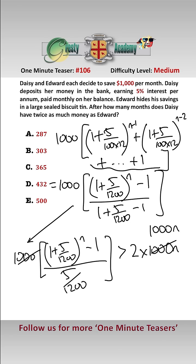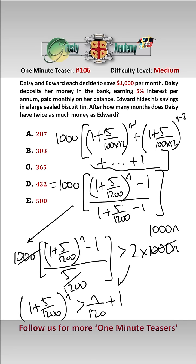Solving this, we can simplify it to: (1 + 5/1200) to the n must be greater than n/120 + 1. This is quite a complicated equation to solve. We need a scientific calculator, and the answer is when n is greater than 303.002. So give or take a dollar or two, after 303 months Daisy has twice as much money as Edward. Answer B.